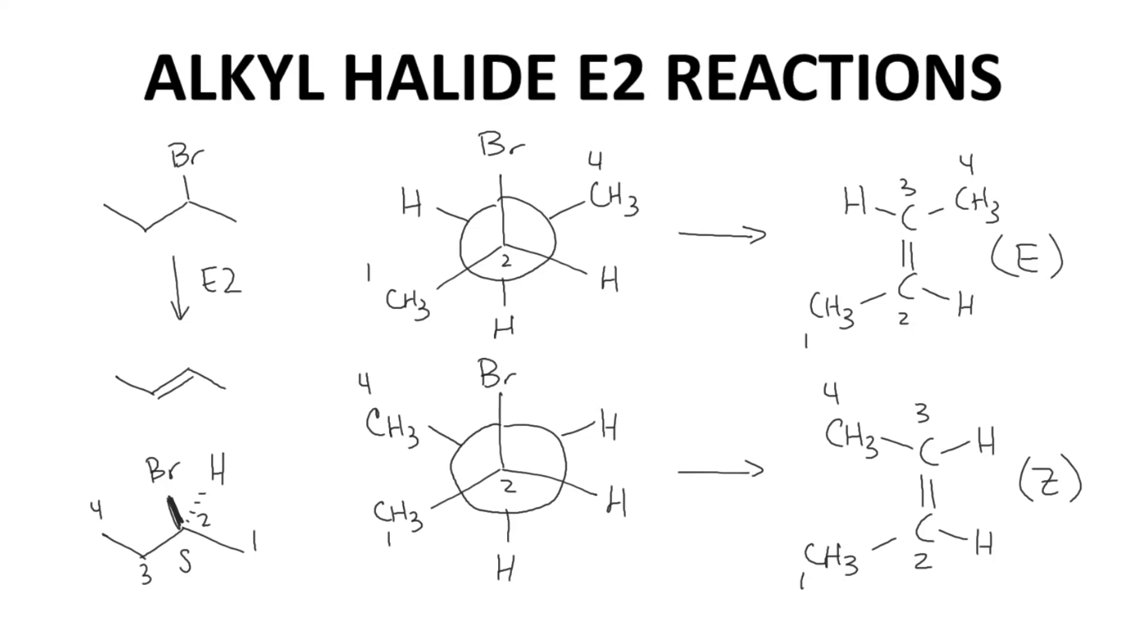Both outcomes, whether E or Z are possible. Both arise from valid staggered conformations. Both have anti-beta hydrogens and leaving groups. Both are Zaitsev products.